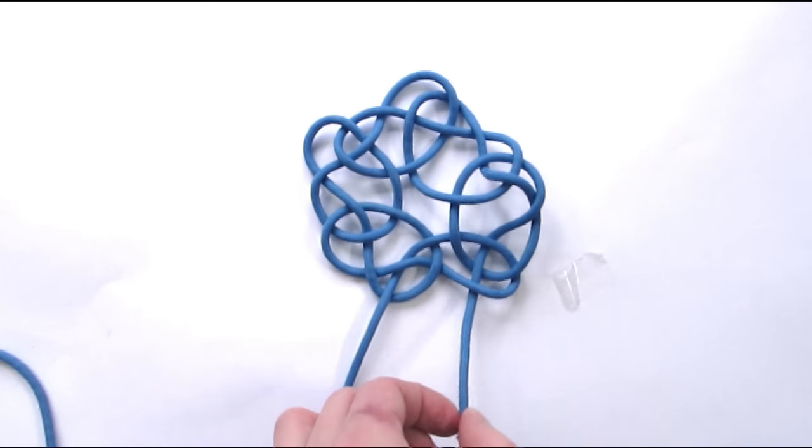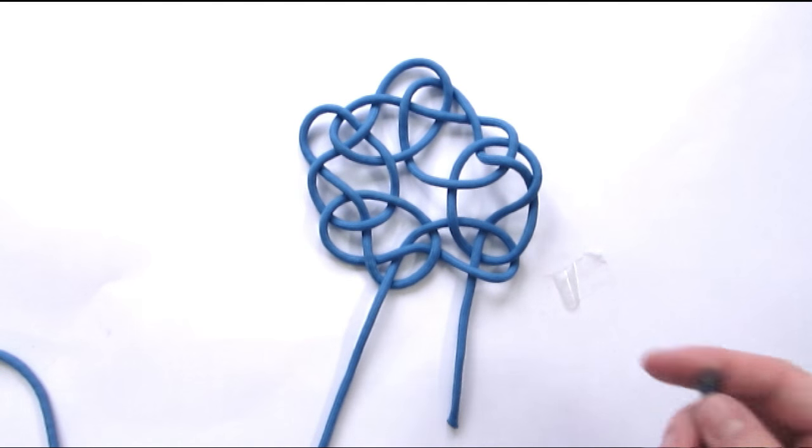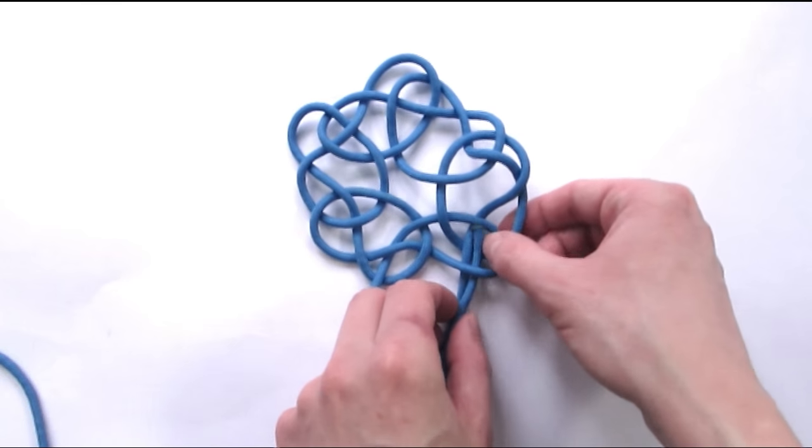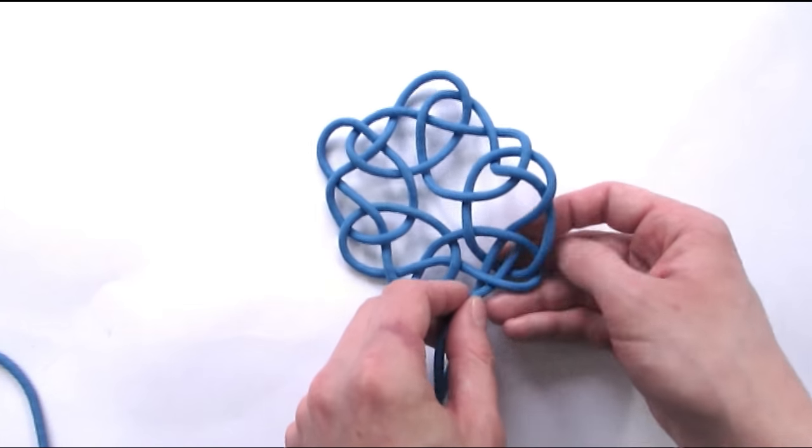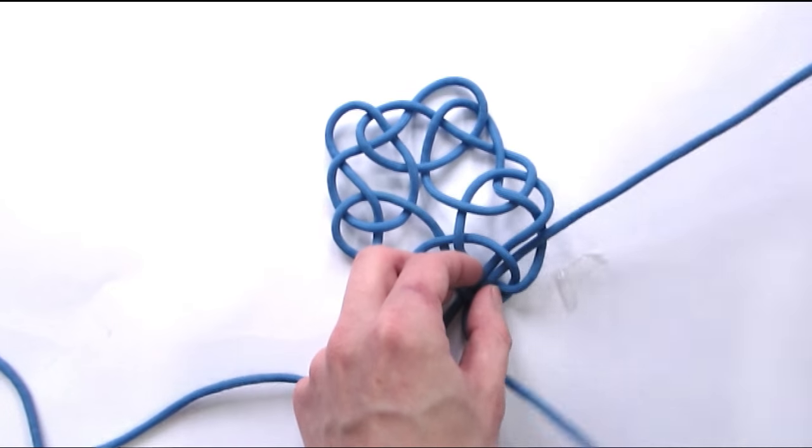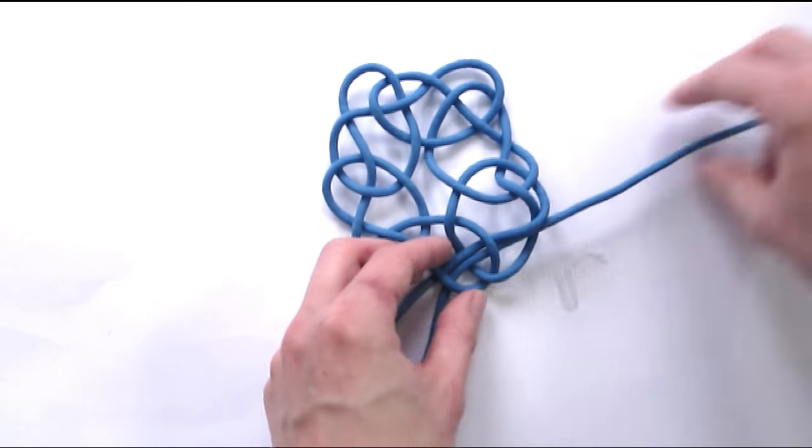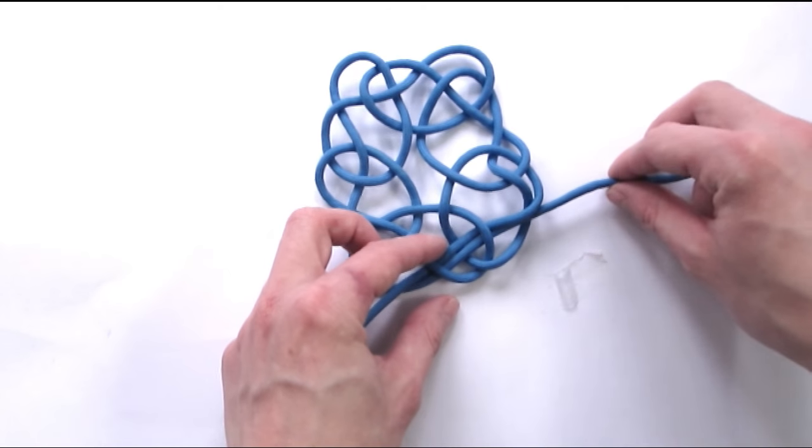We now have our standing end exiting the knot. And we're going to place our working end next to it on the right. And we can now start doubling our knot. And this will give us a doubled Kringle mat.